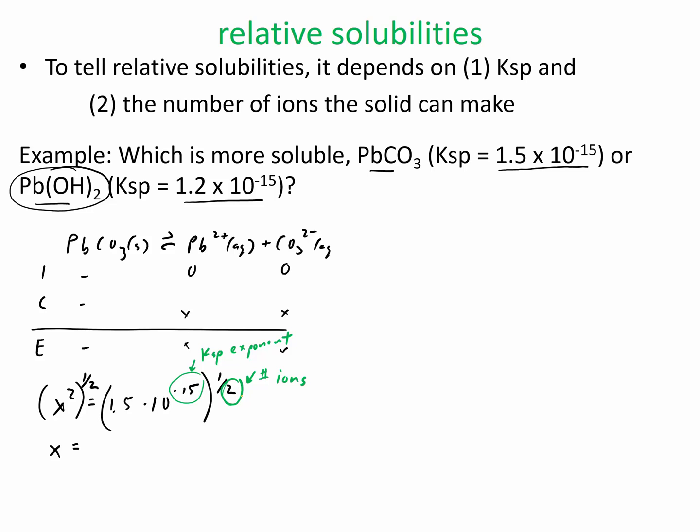This is actually our total number of ions, the number that was right here. So our answer for the solubility then for this is, let's see what I have here. I have 3.9 times 10 to the negative 8th moles per liter.